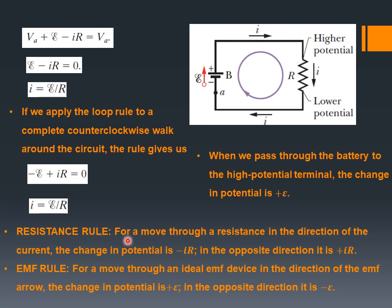The resistance rule: for a move through a resistance in the direction of the current, the change in potential is negative, minus IR. In the opposite direction it is plus IR. The EMF rule: for a move through an ideal EMF device in the direction of the EMF, the change in potential is positive EMF. If you go from the positive terminal to the negative terminal — opposite to the direction of the EMF — the change in potential is minus EMF.